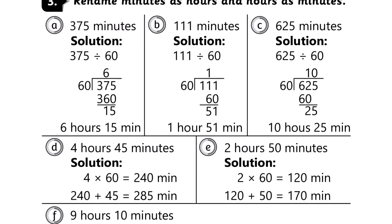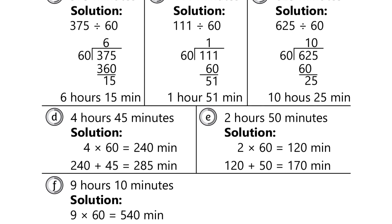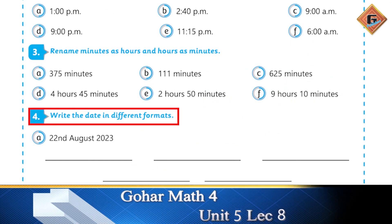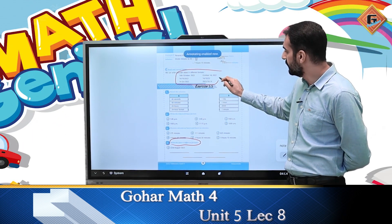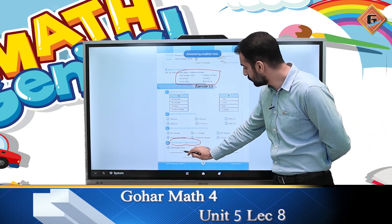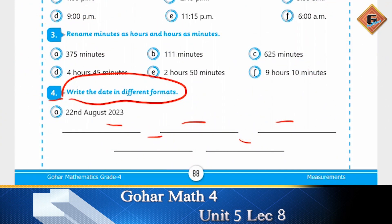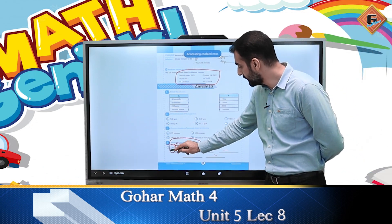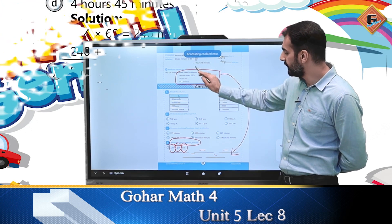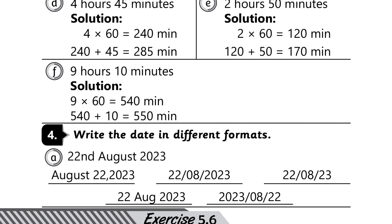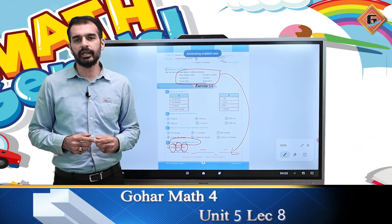Question number 4: write the date in different formats। एक date लिखी हुई है, इसको different formats में लिखना है। आप देख सकते हैं कि ऊपर date लिखने के six different formats दिये गए हैं। उन्हीं formats को यहाँ copy कर लेना है — एक format दे दिया गया है, बाकी 5 ऊपर से देखकर लिख लेने हैं। जो month, date और year हैं उन्हें convert करके ऐसे लिख लेना है और keys के answer से verify कर लेना है। उम्मीद है यह topic समझ आ गया होगा।